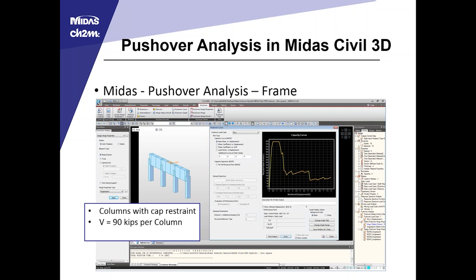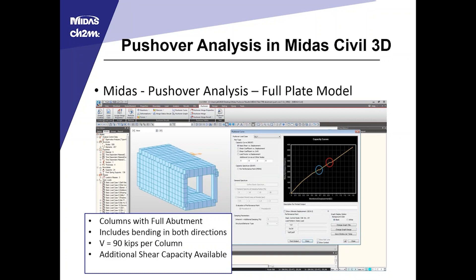It's notable in the capacity curve that after the shear capacity was lost in the four-beam bent, there was a little additional residual capacity — whereas in the single column it went to near zero. With more force interaction and spreading, the columns were still able to maintain slightly more shear after the force dropped off. Moving to the columns with the full abutment including bending in both directions, that also reached a shear of about 90 kips per column, found by combining the transverse and longitudinal shear components as a resultant.